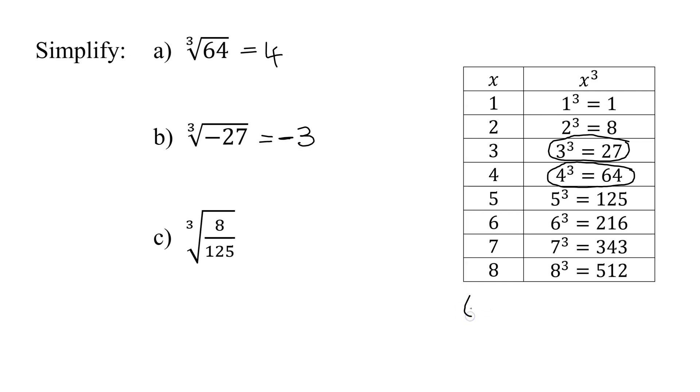Double check that. Negative 3 times negative 3 times negative 3. Well, if I have 3 negatives multiplied together, it's a negative. 3 times 3 is 9. 9 times 3 is 27. Did I get it right? Yes.